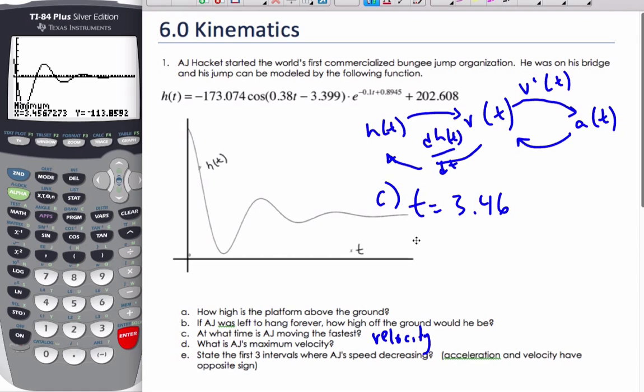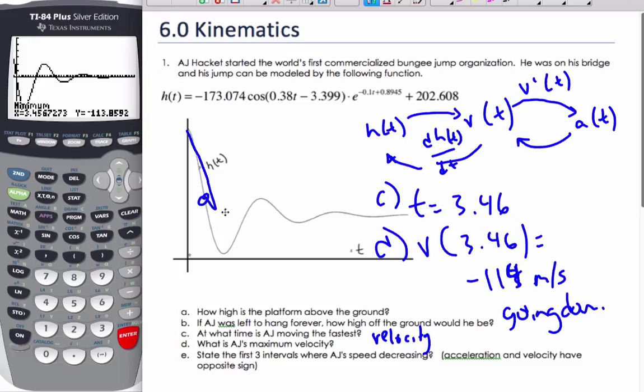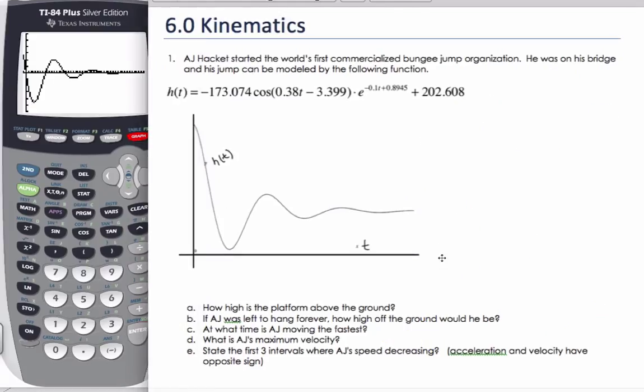What is his maximum velocity, part D? Well, the velocity at 3.46 is negative 113.014 to three significant figures, meters per second. And this is going down. He's going fast going down somewhere around here.